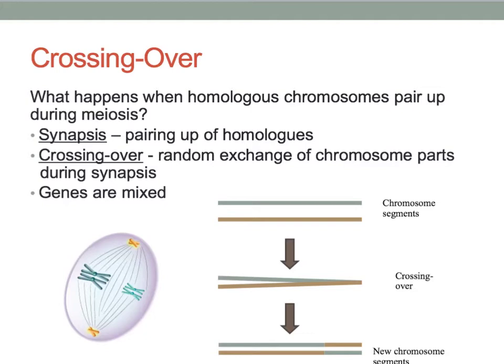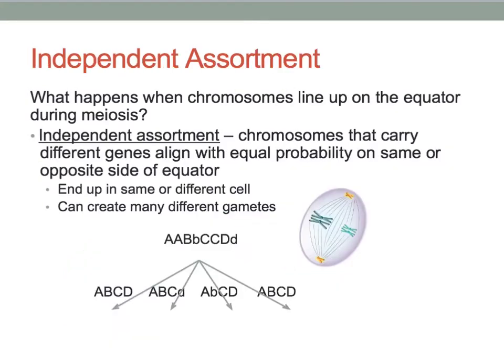This illustration shows how crossing over mixes up the genes on the chromosomes. What happens when chromosomes line up on the equator during meiosis? Independent assortment occurs during metaphase of the first meiotic division. The chromosomes that carry different genes align with equal probability on the same or opposite side of the equator. These chromosomes may end up in a different or same cell, which creates many different gametes for varying genetic combinations.